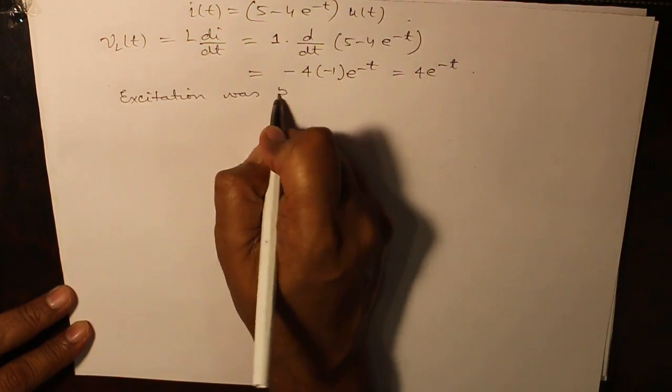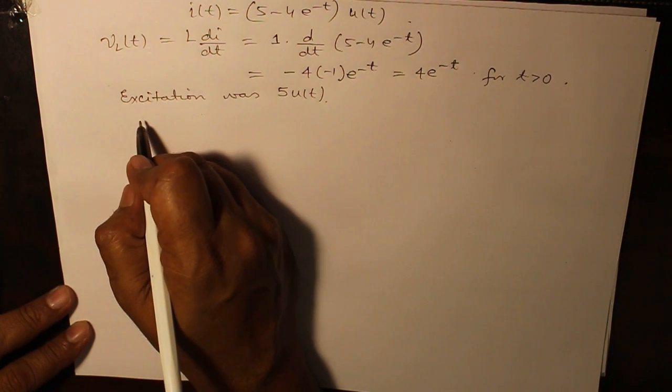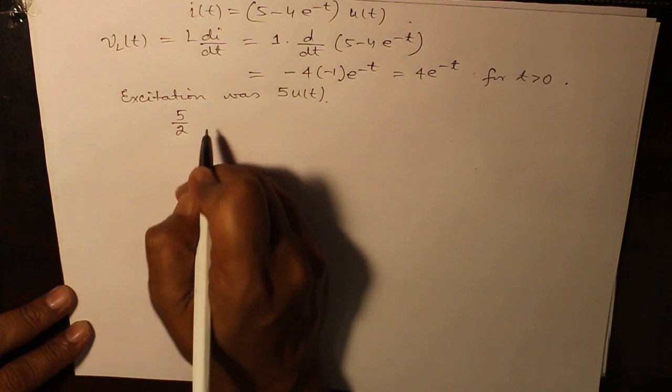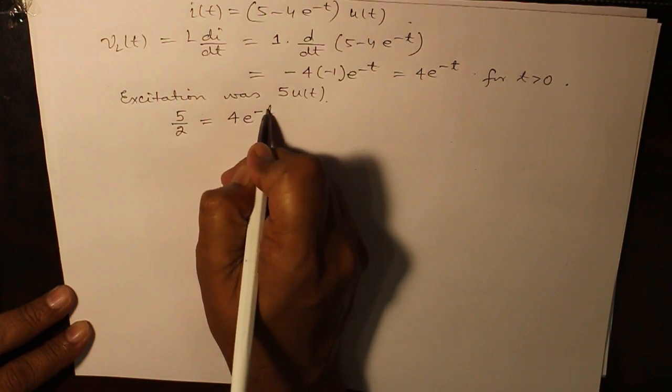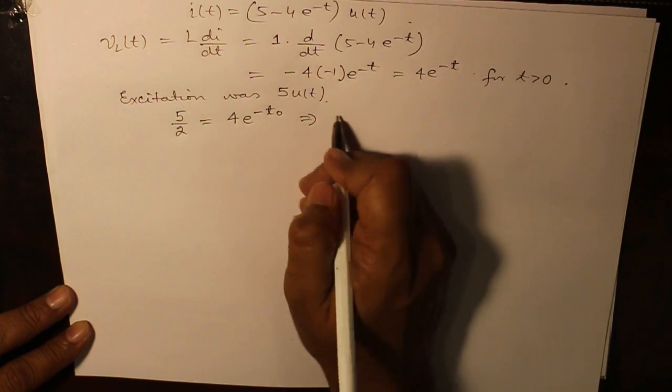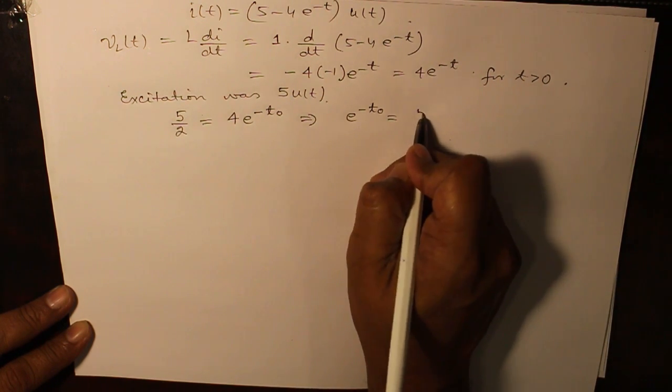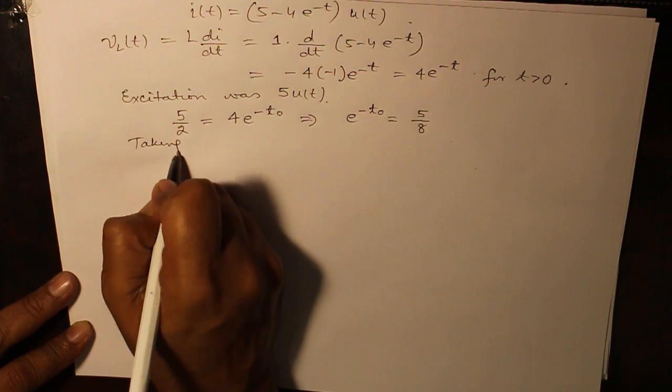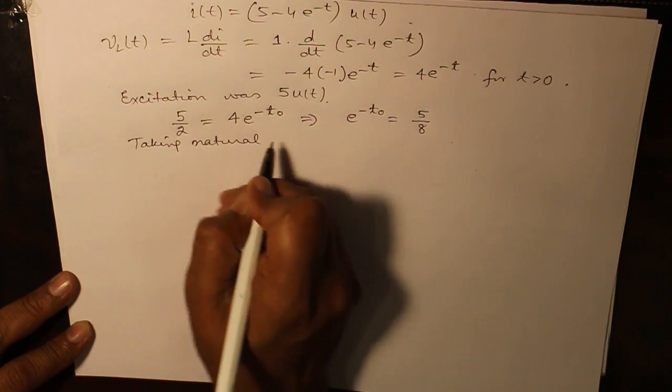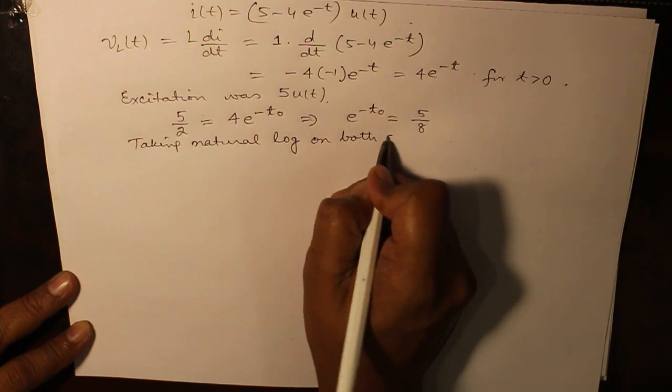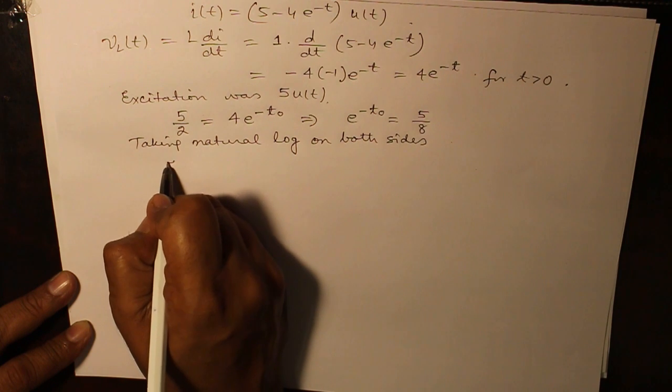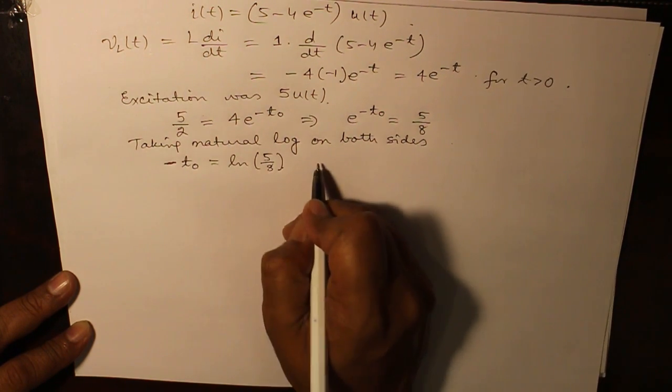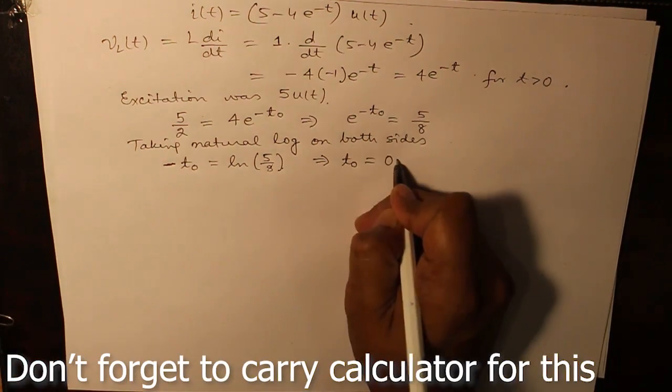When does the voltage become half of the voltage impressed? So the voltage impressed has become 5 by 2 and this is getting equated to t naught which gives you e raised to the power minus t naught as 5 over 8. Taking natural logarithm on both sides, minus t naught equals ln of 5 over 8 which gives you t naught equals 0.47 second.